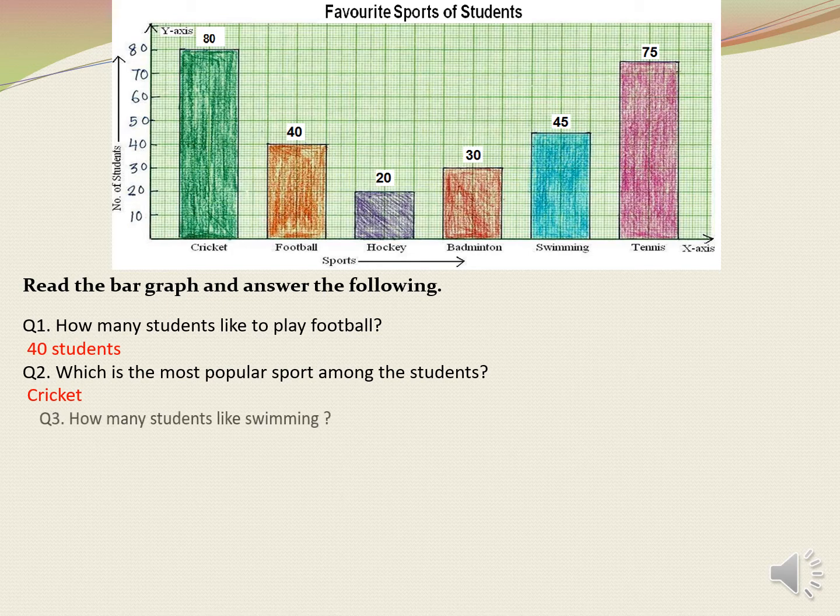Next: how many students like swimming? The blue bar shows swimming. The height of the blue bar reaches between 40 and 50. Therefore, the answer is 45 students.